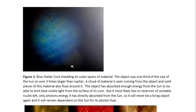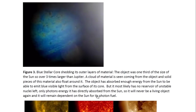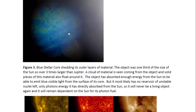Solid pieces are seen as well — some solid pieces. It sheds material in the form of dust and in the form of some very small pieces, and obviously this material is all in the solid phase. The object seems to have absorbed enough energy from the sun to be able to emit this blue visible light from the surface of its core. But it most likely has no reservoir of unstable nuclei left — only photon energy it has directly absorbed from the sun.